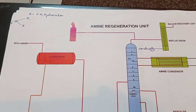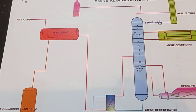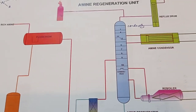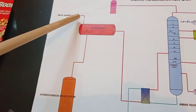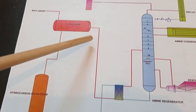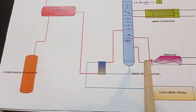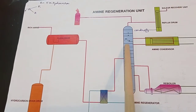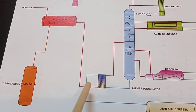In the amine regeneration unit, lean amine enters from the top of the acid gas removal contactor and sour gas from the bottom; the resulting rich amine goes to the amine regeneration unit where H₂S is removed and sent to the sulfur recovery unit. Rich amine first enters a flash drum, then goes to an interchanger. The interchanger exchanges heat between the cold rich amine and the hot lean amine coming from the reboiler. The reboiler heats the amine in the regenerator, which operates like a distillation column with trays.